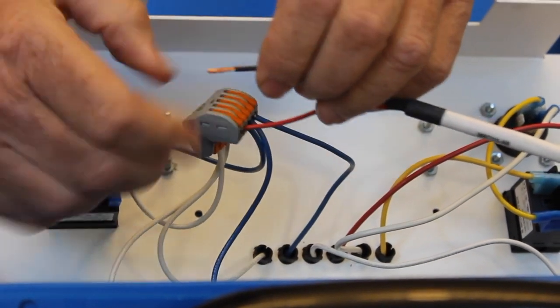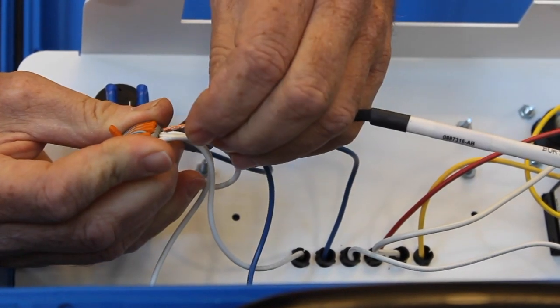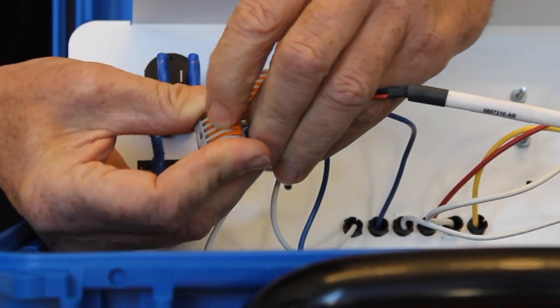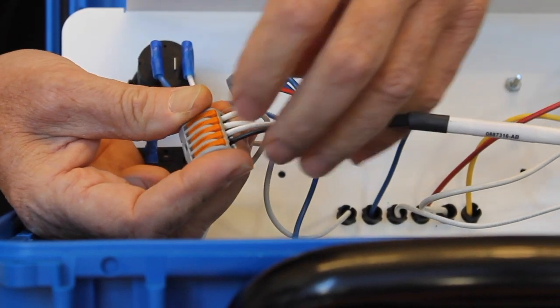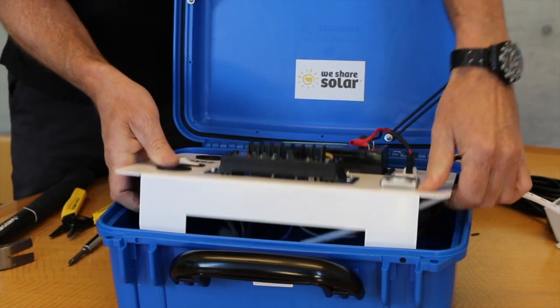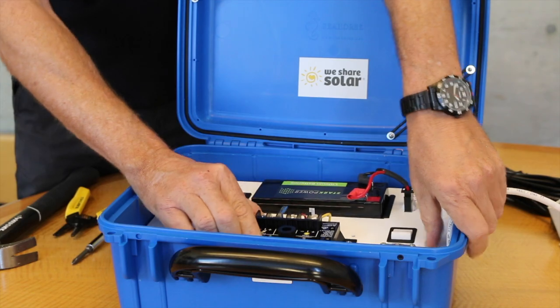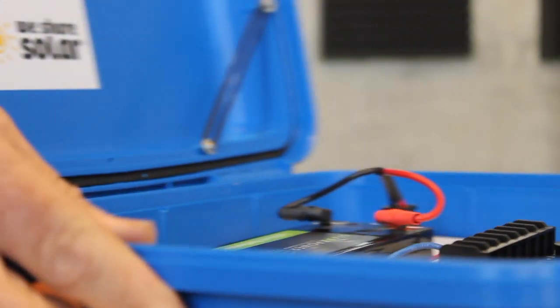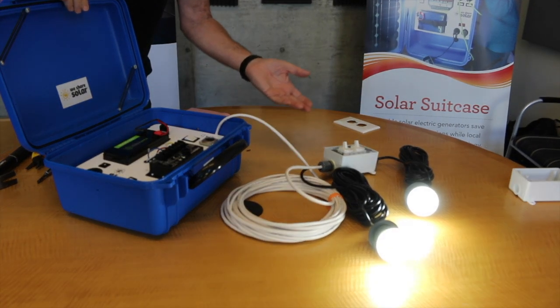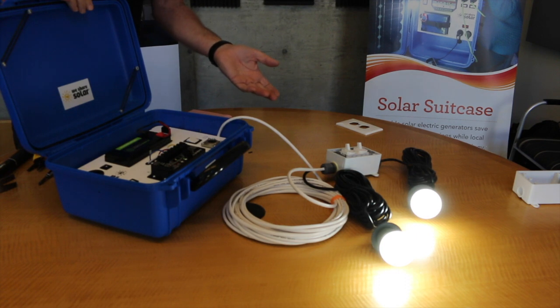And then we'll do the same with the negative. So white is the universal negative in electricity. Though in battery technology, black is often used for negative. Now we've wired this in. You can see we have a space for one more switch box. Now I'll turn this back. And I'm going to turn on the main power switch. We'll take the switch. And you have a verification that you have a properly wired switch box.